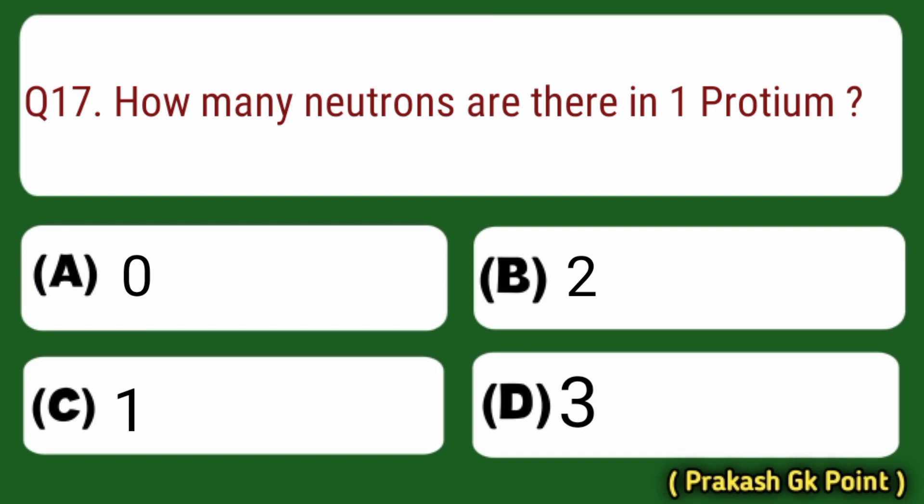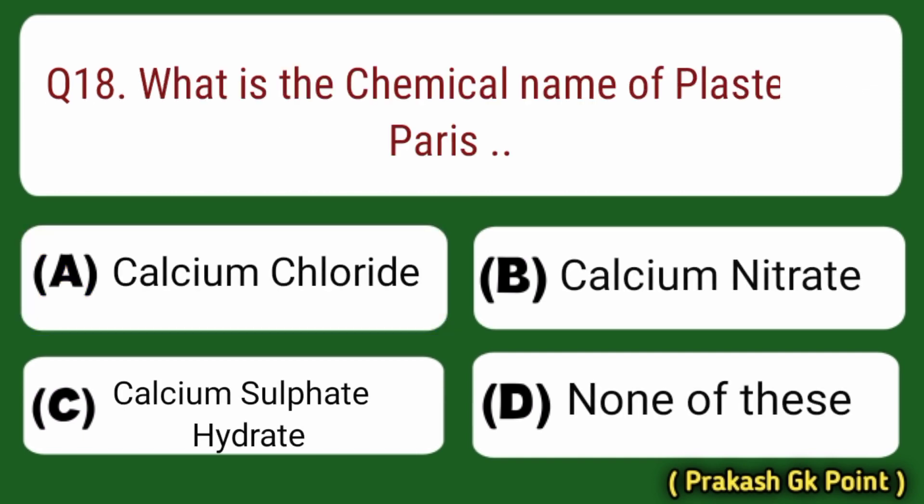Next question: how many neutrons are there in one proton? Answer: Option A — Zero neutrons.